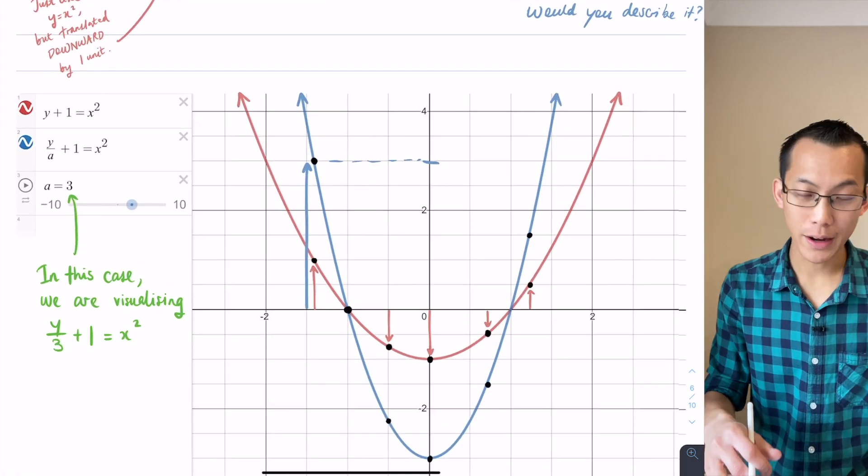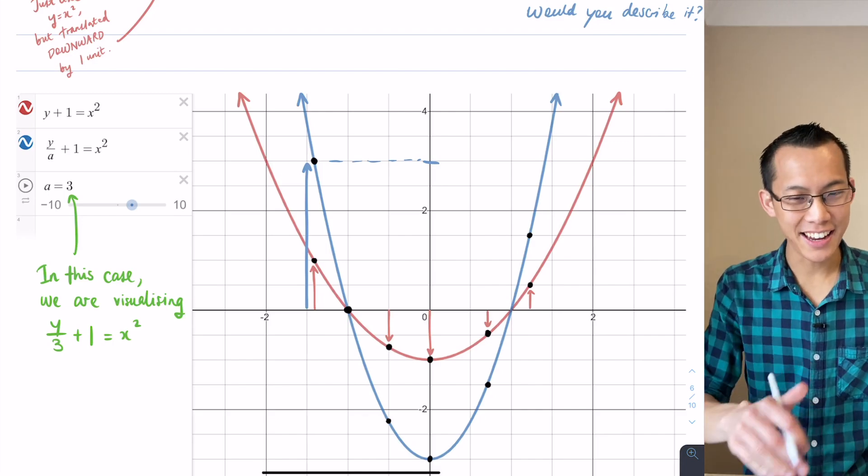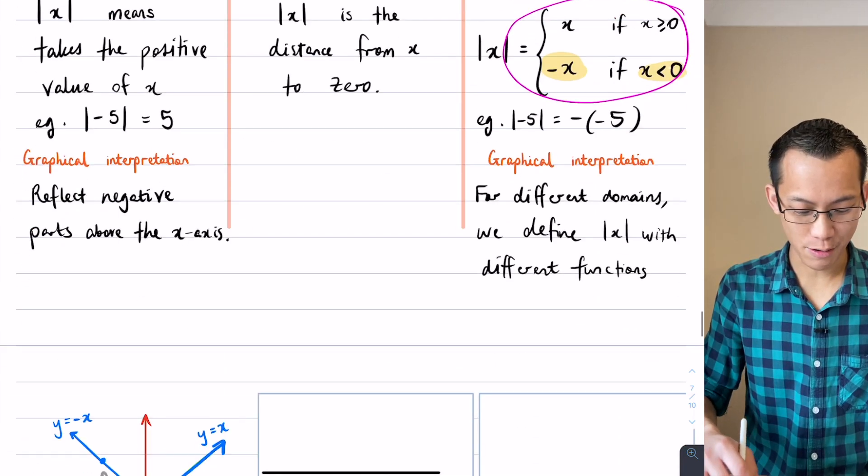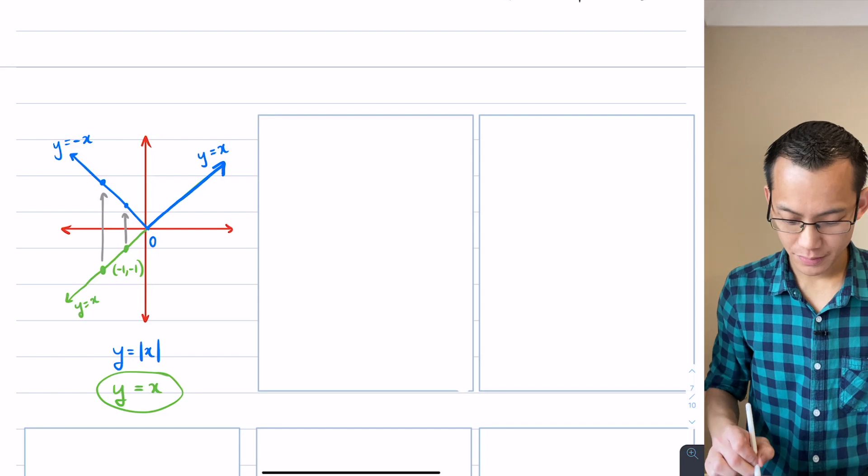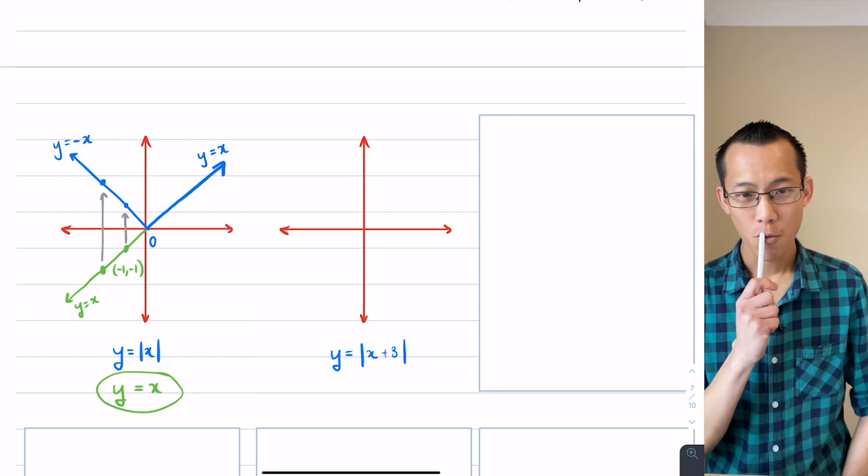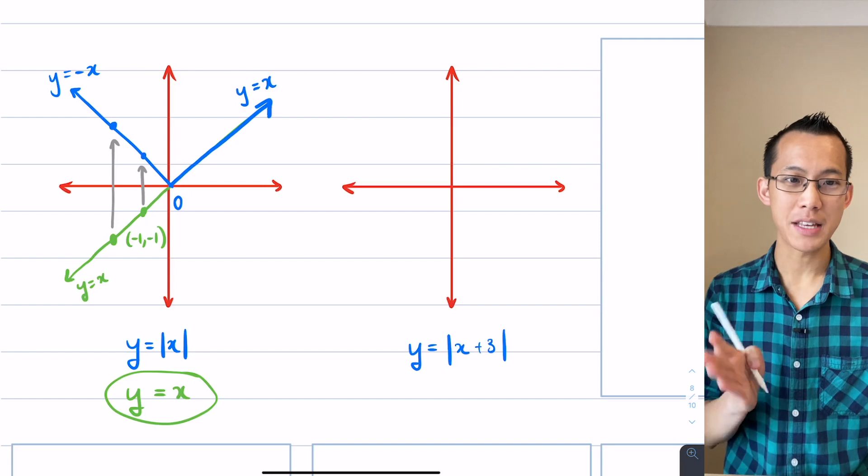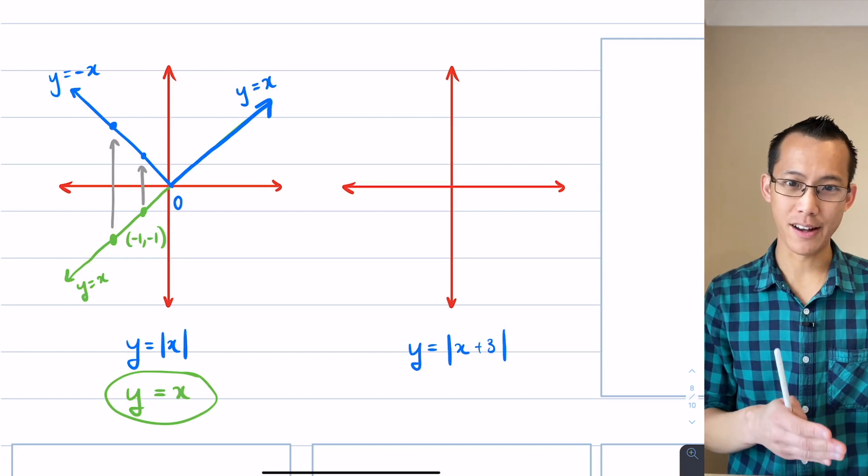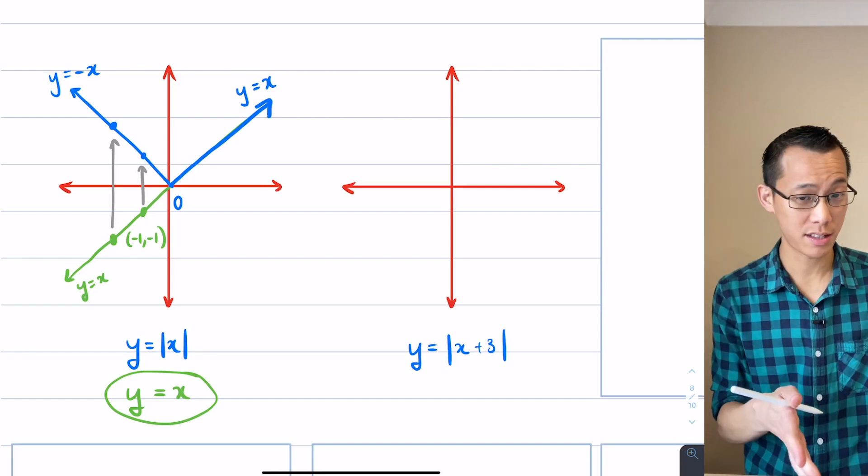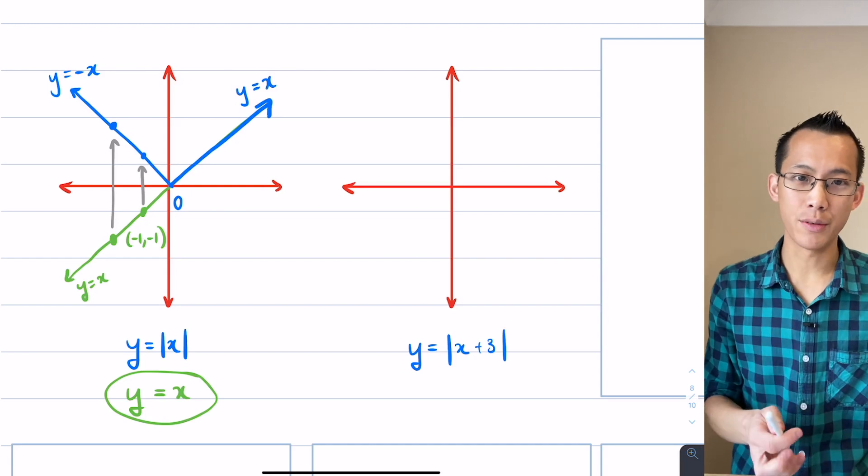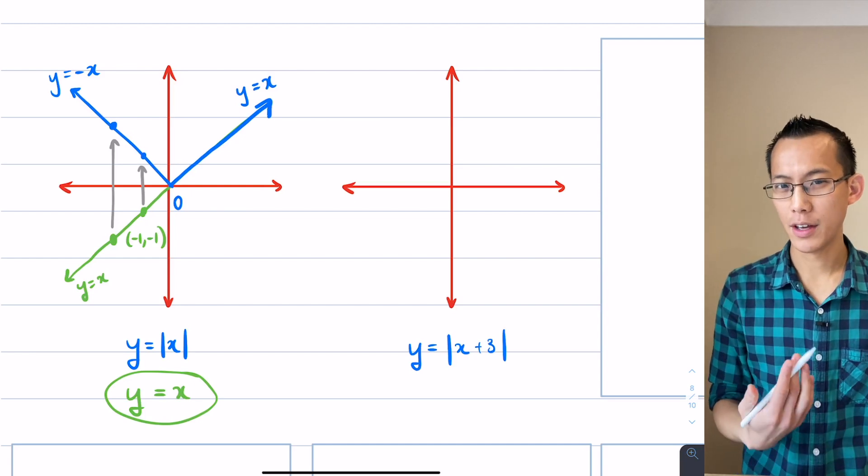Okay so we're going to take this knowledge and we're going to apply it translation and dilation to our absolute value graphs down here. So let's have a go with this guy first. When you see this equation y equals the absolute value of x plus 3, I want you to think about what that plus 3, which is the only difference, what is it doing and what effect is it going to have visually.